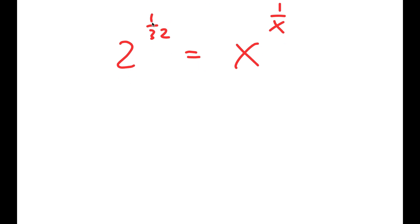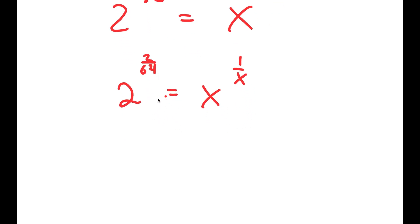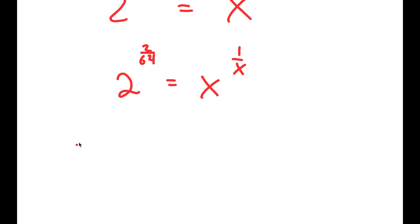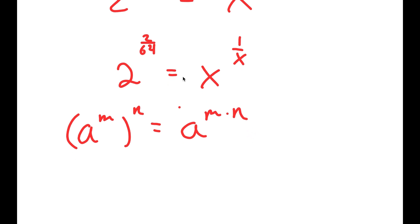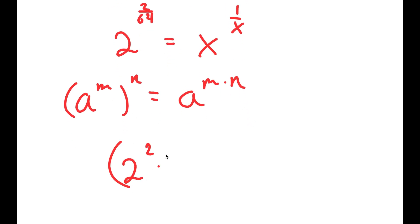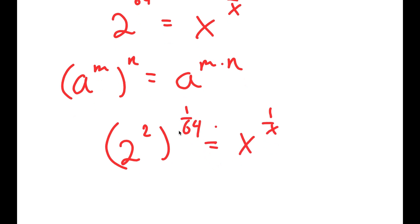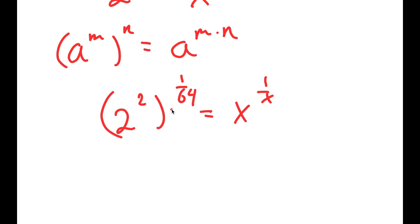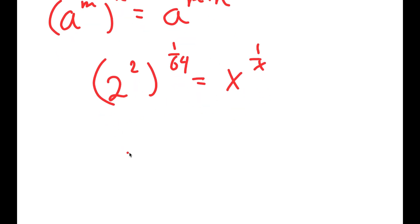What we can do is rewrite 1 over 32 as 2 over 64. Remember, a to the power of n to the power of m equals a to the power of n times m, so we can reverse this and rewrite it as 2 to the power of 2, to the power of 1 over 64. And 2 to the power of 2 is 4, so we get 4 to the power of 1 over 64 is equal to x to the power of 1 over x.